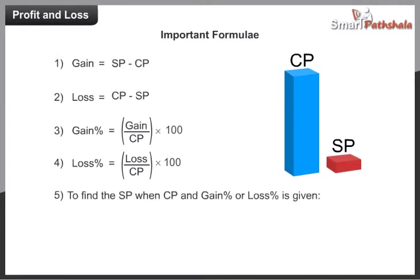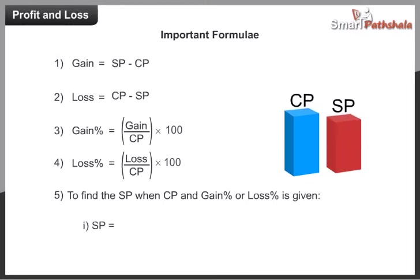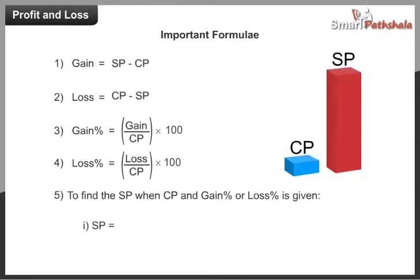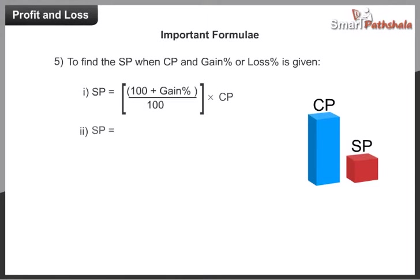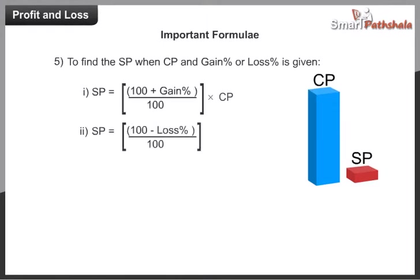5. To find the SP when CP and gain percent or loss percent is given: SP is equal to 100 minus loss percent, into CP.